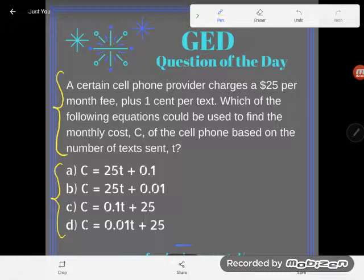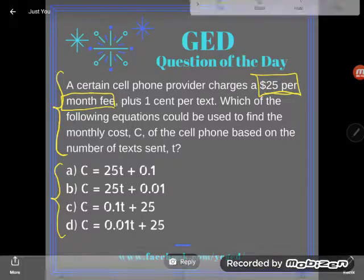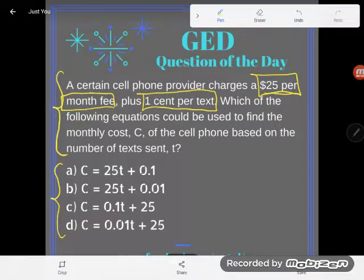Okay, so let me just read the problem first. A certain cell phone provider charges a $25 per month fee. Okay, that's one thing we're going to have to pay, $25 per month fee. Plus a one cent per text fee. They're going to charge us also a cent every time we text. And you guys nowadays with all your unlimited texts and talk and type and data you're not used to this. But back in the day, we used to pay for every text we sent.